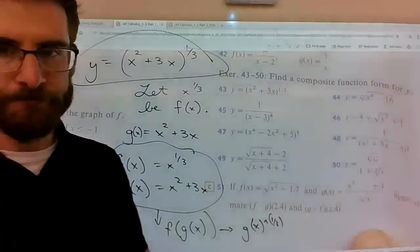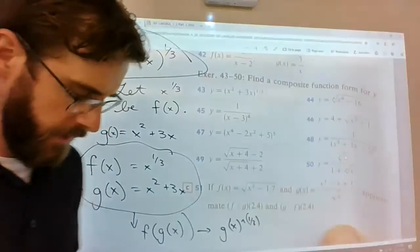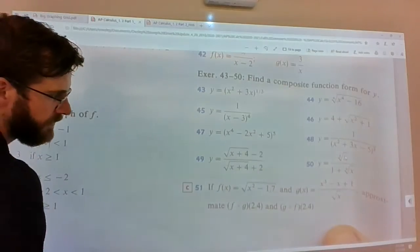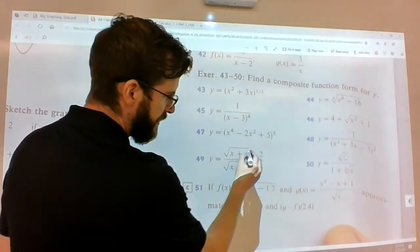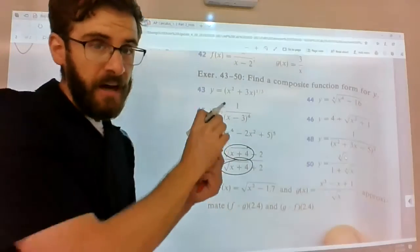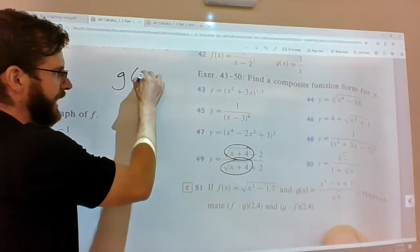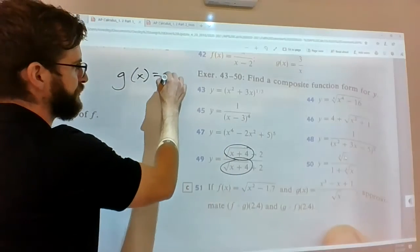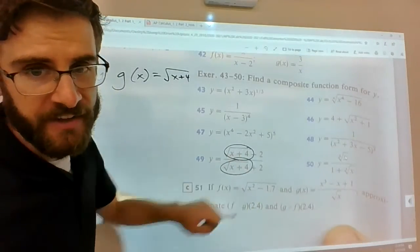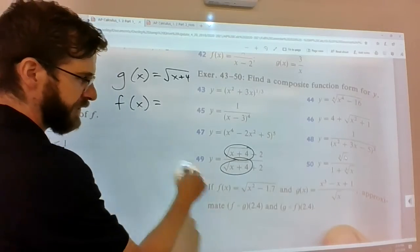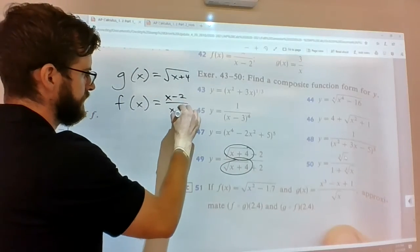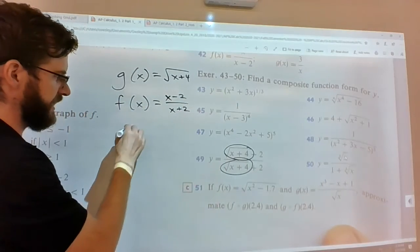So then when you see 49, I think this will be a really quick move. Think about √(x + 4) as the plug-in function. So it's like I'm plugging in √(x + 4) into a function that has placeholders in the numerator and the denominator. Those placeholders would be x, and then -2 over x + 2. And therefore this is going to be f(g(x)).